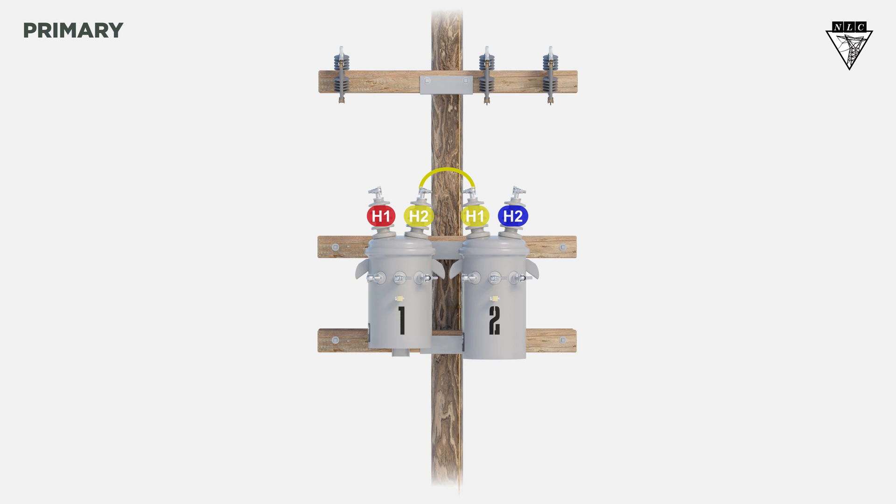Next, connect the H1 of the first transformer to the A phase. Connect the H1 of the second transformer to the B phase. Then, connect the H2 of the second transformer to the C phase.